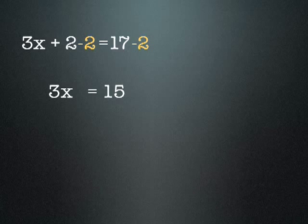x is a number when multiplied by 3, it makes 15. So we need to undo the times by 3 — we do the opposite, which is divide by 3. So we're dividing both sides of the equation by 3. On the left-hand side we have a 3 on the top line and a 3 on the bottom line; when we have the same number on the top and bottom of a fraction, we can cancel them out. So the next line of our equation looks like x equals 5, because 15 divided by 3 is 5. So we've solved that equation.